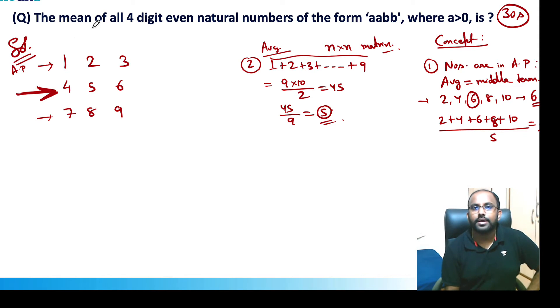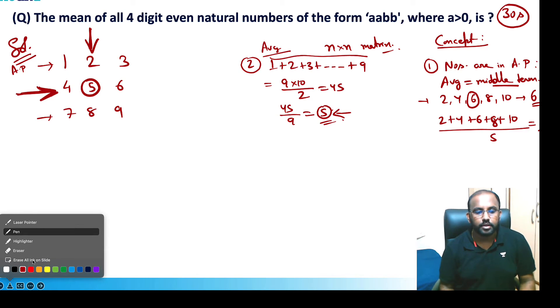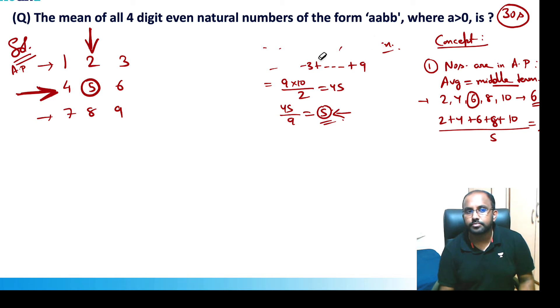The final average is the middle of the middle row and middle column, which is 5. That's the formula we're using in this question. So on this beautiful formula, this question is based.